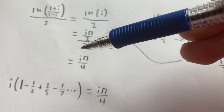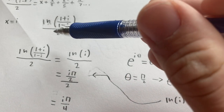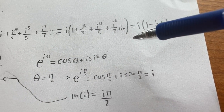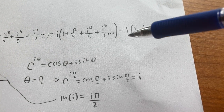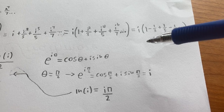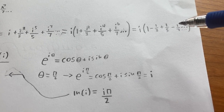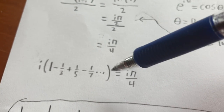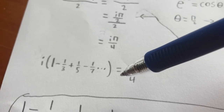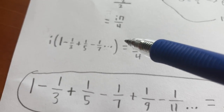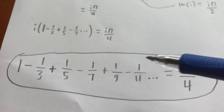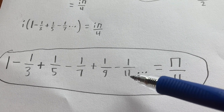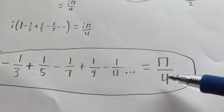So on one hand, we know that the natural log of 1 plus i divided by 1 minus i, over 2, is equal to i times pi divided by 4. But on the other hand, up here, we figured out that it was equal to i times 1 minus 1 third plus 1 fifth minus 1 seventh, etc. So therefore, i times 1 minus 1 third plus 1 fifth minus 1 seventh forever is equal to i times pi divided by 4. So finally, we divide by i on both sides to get that 1 minus 1 third plus 1 fifth minus 1 seventh plus 1 ninth minus 1 eleventh, etc., forever is exactly equal to pi divided by 4, which was our original goal.